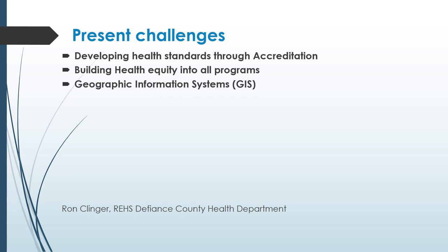Geographic information systems are also a present challenge. We have a GIS platform called FETCH, and we are constantly adding data to it. This allows us to look at a site we are evaluating and also at adjoining parcels and sites to see if there are any impacts or restrictions, giving a clear picture of the relationship between location and any restrictions that might apply.